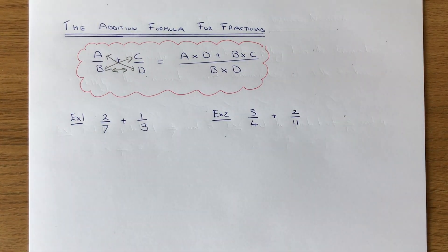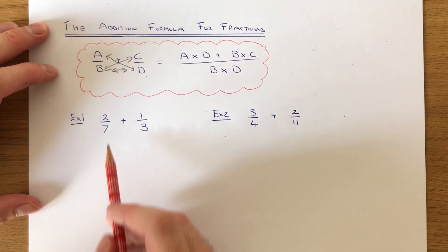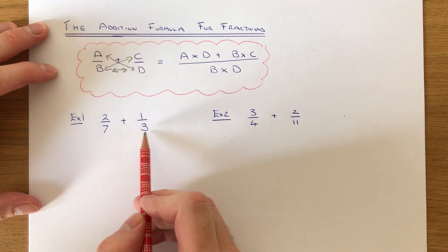It's not the best method to use, but it will always give you the right answer. You might have to simplify the fraction at the end. Let's have a look at the two examples here. The first one is two sevenths add one third.